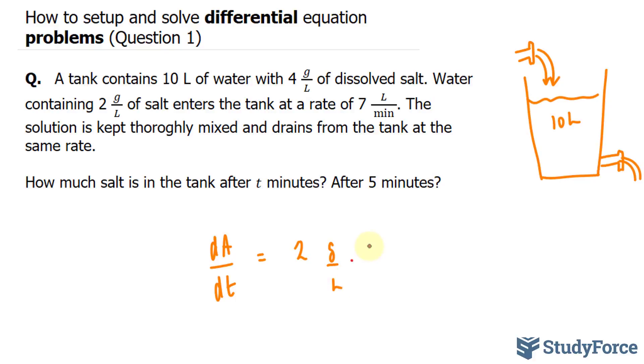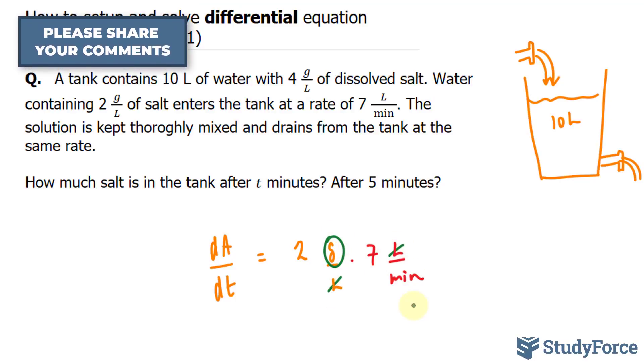Now apply the units just for reference sake. And if we multiply this by 7 liters per minute, we'll actually get the amount of grams per minute, the amount of grams of salt water per minute. So this is what's coming in. This is that rate right there.